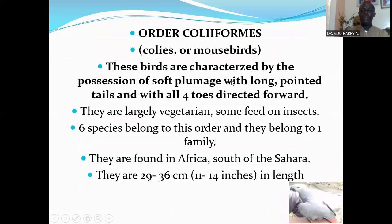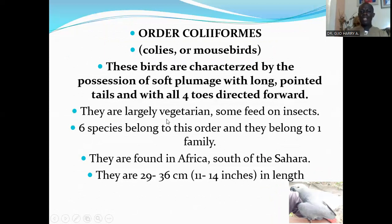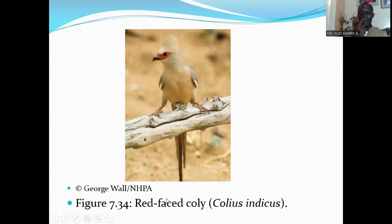Order Coliiformes consists of the colies and mousebirds. These birds are characterized by the possession of soft plumage with long, pointed tails and with all four toes directed forward. They are largely vegetarian, though some feed on insects. Six species belong to this order and they belong to one family. They are found in Africa south of the Sahara. They are 29 to 36 centimeters in length. Here is a red-faced mousebird.